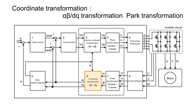In coordinate transformation, stationary coordinate current values such as I-alpha and I-beta are transformed into rotational coordinate currents such as I-d and I-q. When rotational coordinate axes d-axis and q-axis are used, rotor position information — value theta — is needed. This value theta is detected by a rotor position detection function.